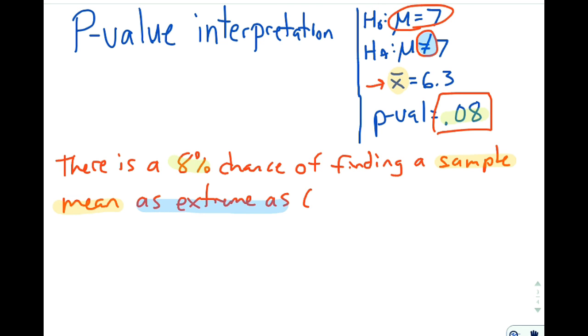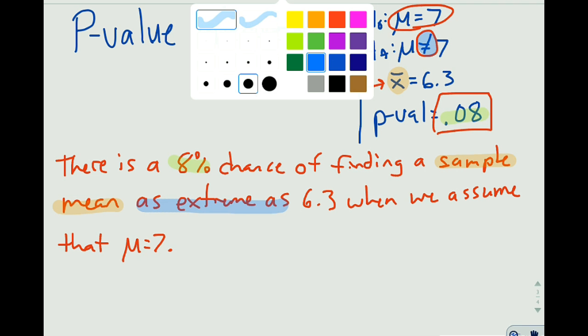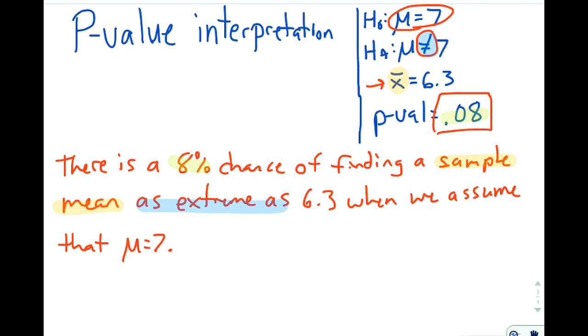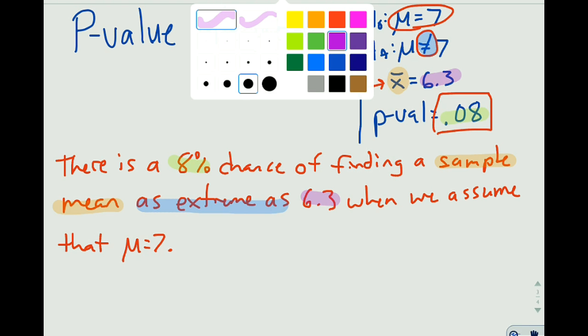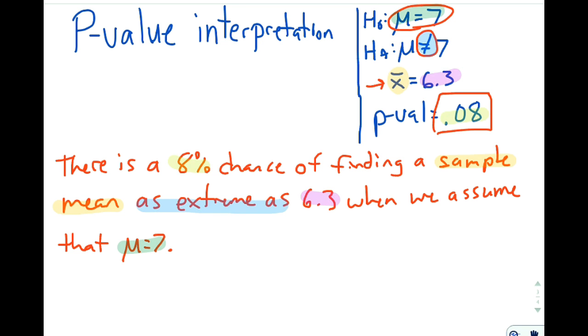6.3 when I assume, or when we assume, that μ equals 7, that the null hypothesis is true. That is the assumption we are making. And that 6.3, that sample mean comes from this 6.3 right here, our sample mean. And the μ equals 7, of course, is our null hypothesis. So this μ equals 7 comes from up here.